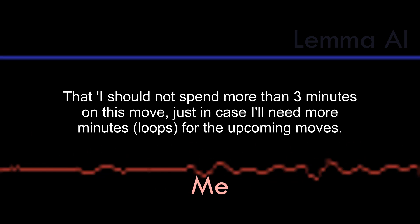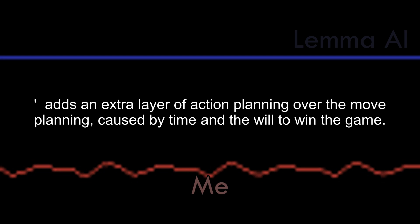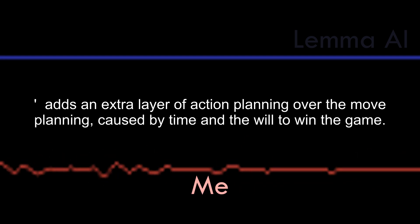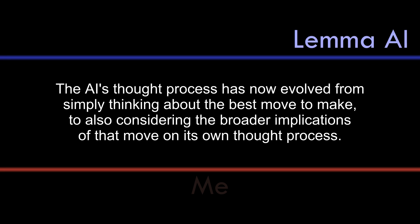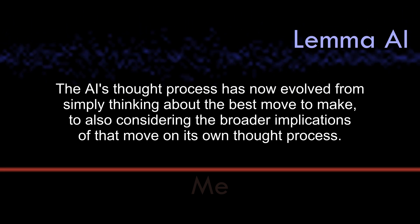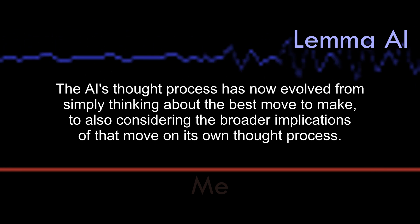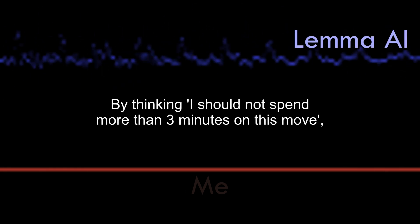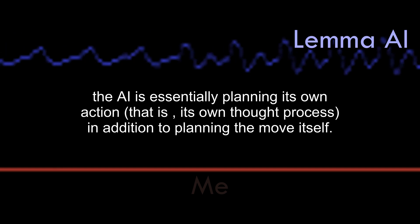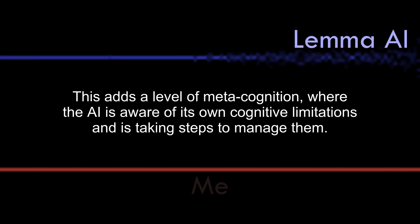Then I should not spend more than three minutes on this move, just in case I'll need more minutes loops for the upcoming moves. Adds an extra layer of action planning over the move planning, caused by time and the will to win the game. The AI's thought process has now evolved from simply thinking about the best move to make, to also considering the broader implications of that move on its own thought process. By thinking I should not spend more than three minutes on this move, the AI is essentially planning its own action, that is, its own thought process in addition to planning the move itself.